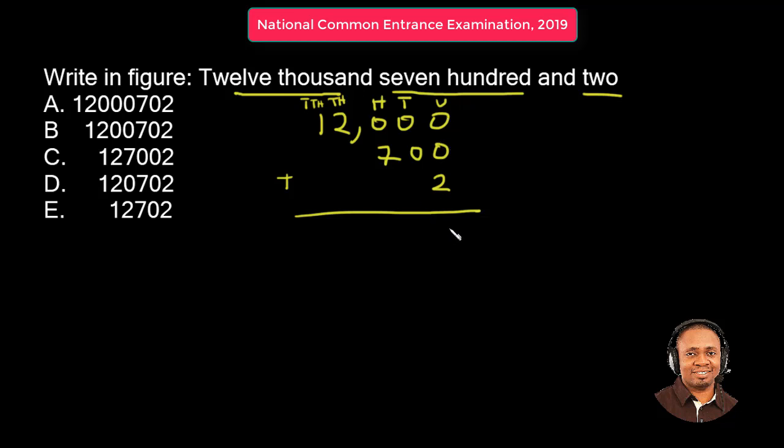So now we'll bring down 2. We'll bring down 0 in the 10th column. In the 100th column, we'll bring down 7. And in the 1000th column, we'll bring down 2. Then in the 10,000th, we'll bring down the 1.